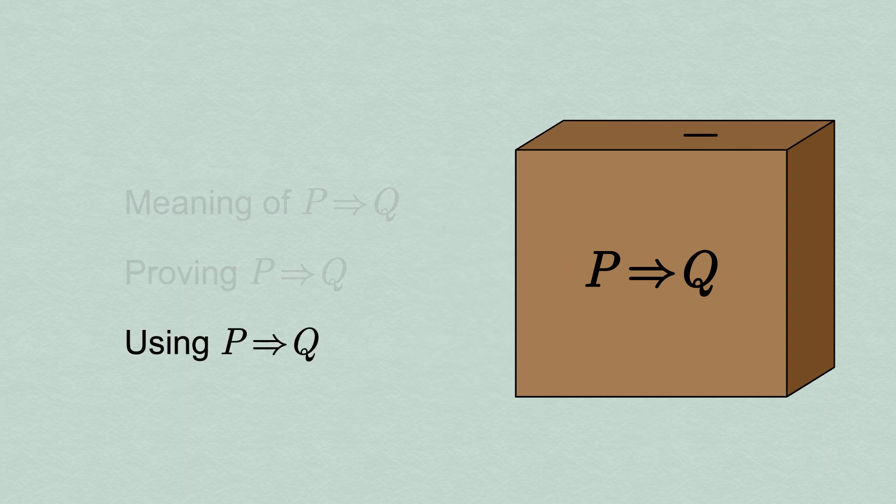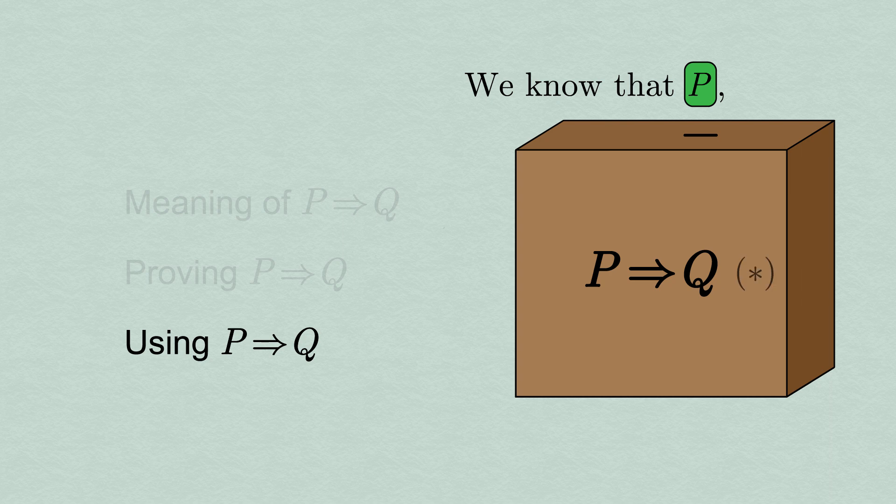Using this implication simply amounts to stating in words exactly what this transaction looks like from the outside of the box. If we know that P implies Q is true, and want to use it in a proof, we should start by clearly stating that P is true, giving a reason why if necessary.